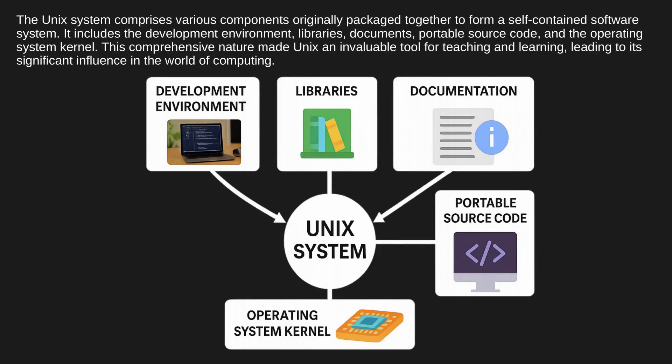The Unix system comprises various components originally packaged together to form a self-contained software system. It includes the development environment, libraries, documentation, portable source code, and the operating system kernel. This comprehensive nature made Unix an invaluable tool for teaching and learning, leading to its significant influence in the world of computing.